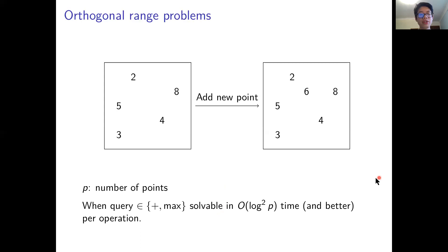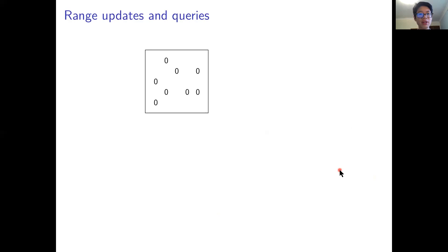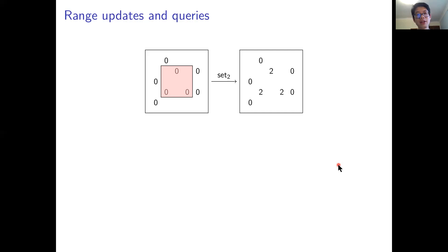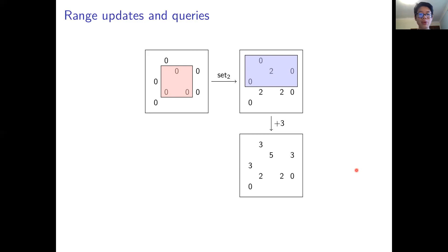But if we want more powerful updates over our dataset — modifying more than a single point — we introduce the idea of range updates. In a range update, we provide a range and a constant, say 2, and allow updates which replace the value of each point in that range with 2. We also consider plus updates, which add a constant to all points within a range.